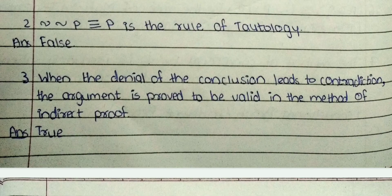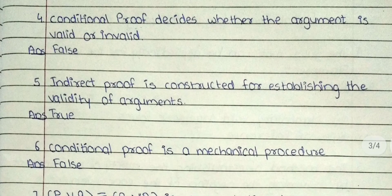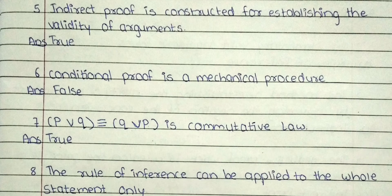Third: when the denial of the conclusion leads to contradiction, the argument is proved to be valid in the method of indirect proof. The answer is true. Fourth: conditional proof decides whether the argument is valid or invalid. The answer is false. Fifth: indirect proof is constructed for establishing the validity of arguments. The answer is true. Sixth: conditional proof is a mechanical procedure. The answer is false.